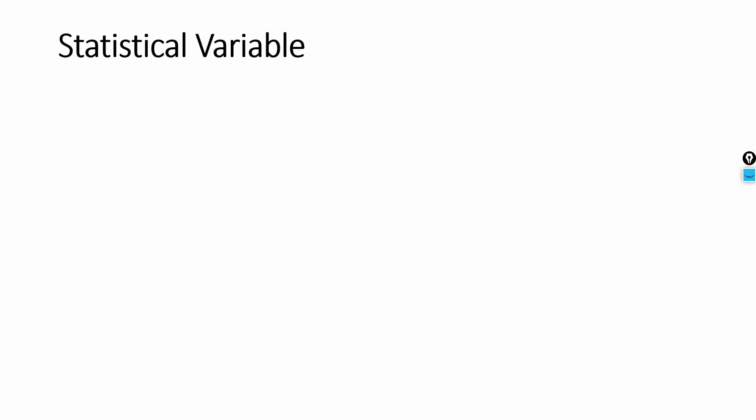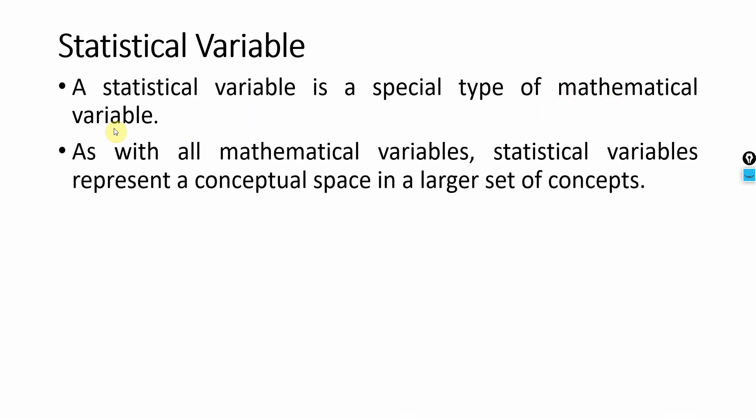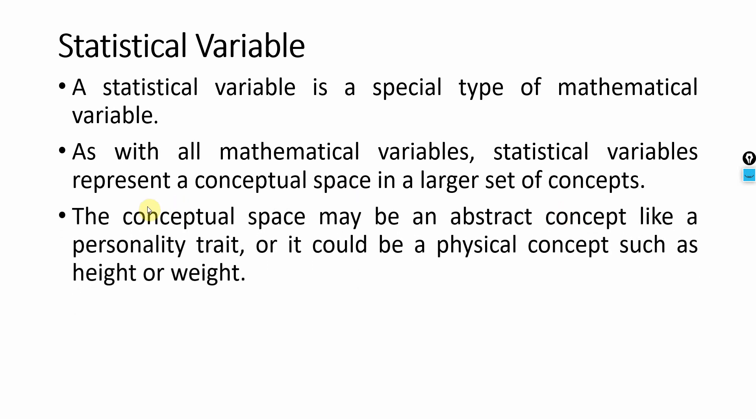What is a statistical variable? A statistical variable is a special type of mathematical variable. As with all mathematical variables, statistical variables represent a conceptual space in a larger set of concepts. That conceptual space may be an abstract concept like a personality trait—someone is an introvert or an extrovert—that may be measured differently in different contexts. Or it could be a physical concept like height or weight that is visible.